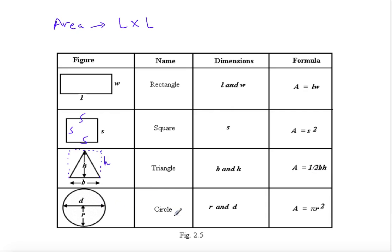The area of a circle equals pi times r squared, where r is the radius of the circle.